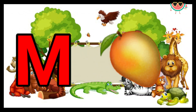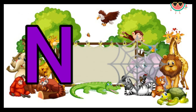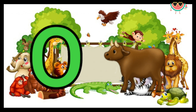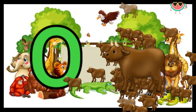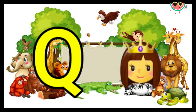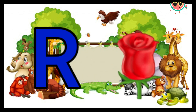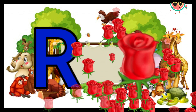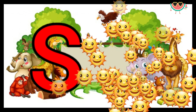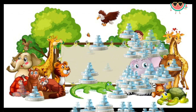M for mango. M for nest. O for ox. B for pigeon. Q for cute. R for roach. S for sun. T for tap. U for umbrella.